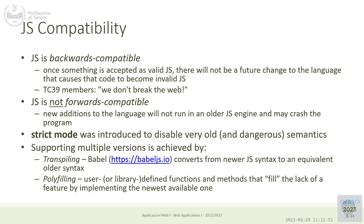JavaScript as I said is a live language, evolving much more than other languages. This has a strange notion of compatibility — they say JavaScript is backwards compatible but not forwards compatible. Backwards compatible means: when something is accepted as valid JavaScript, there will not be a future change to the language that causes that code to become invalid. If you wrote some JavaScript 18 years ago, that code should run in today's browser. So you cannot drop features — you can add features but you cannot drop them or change their semantics.